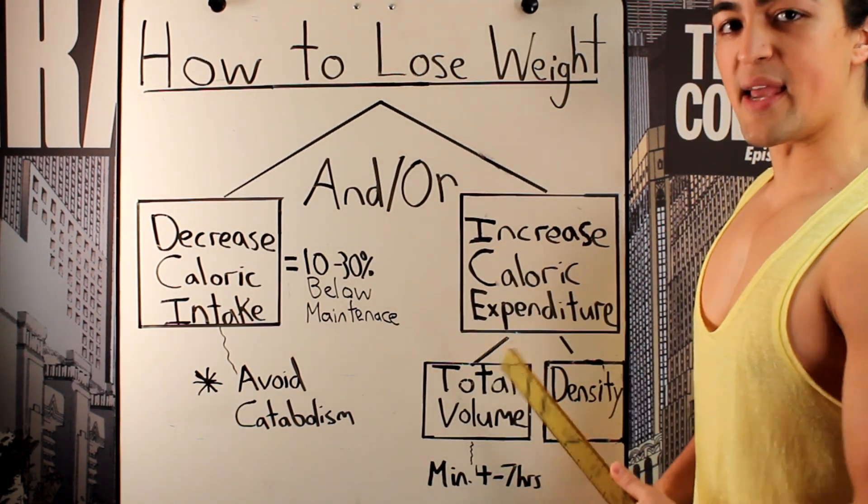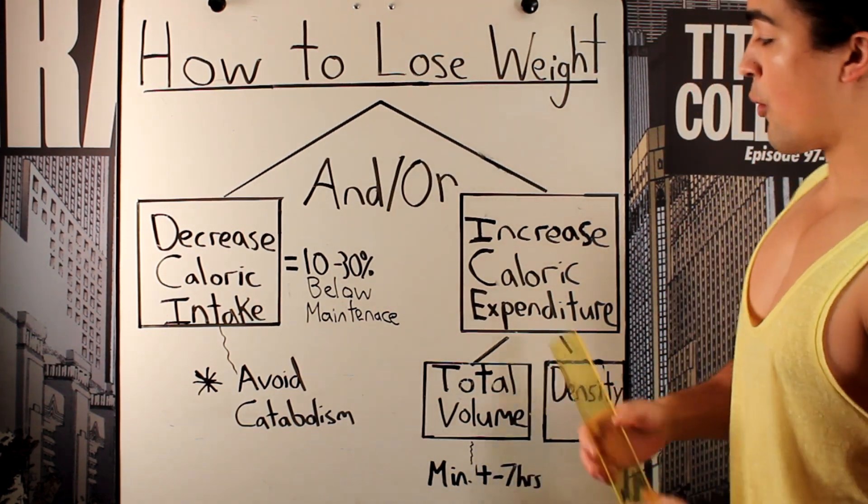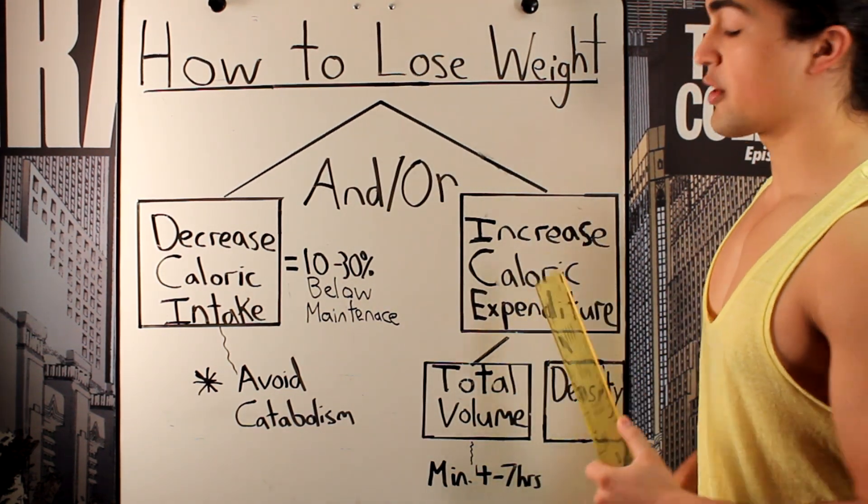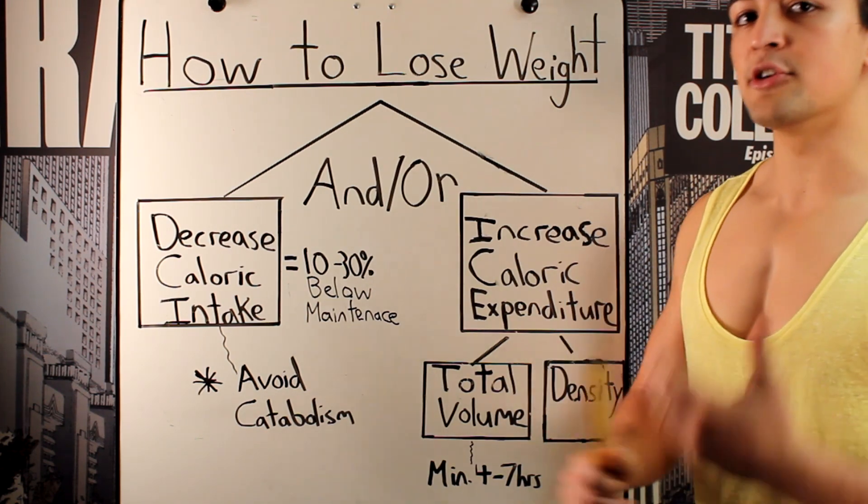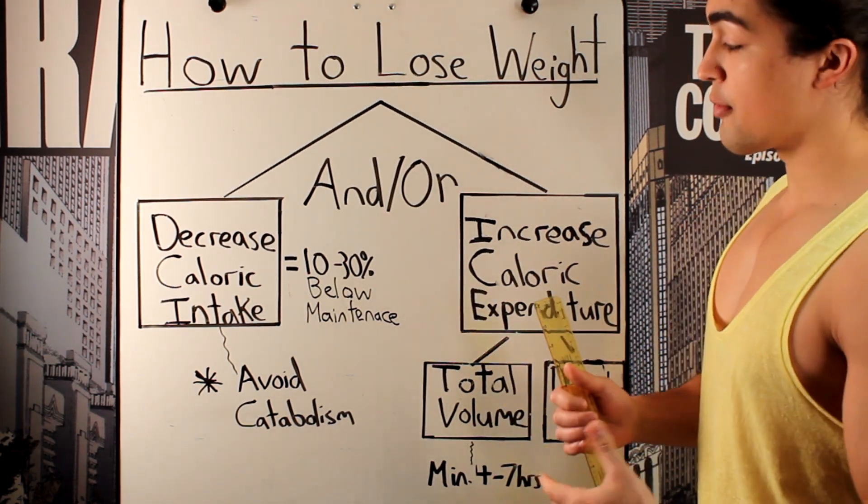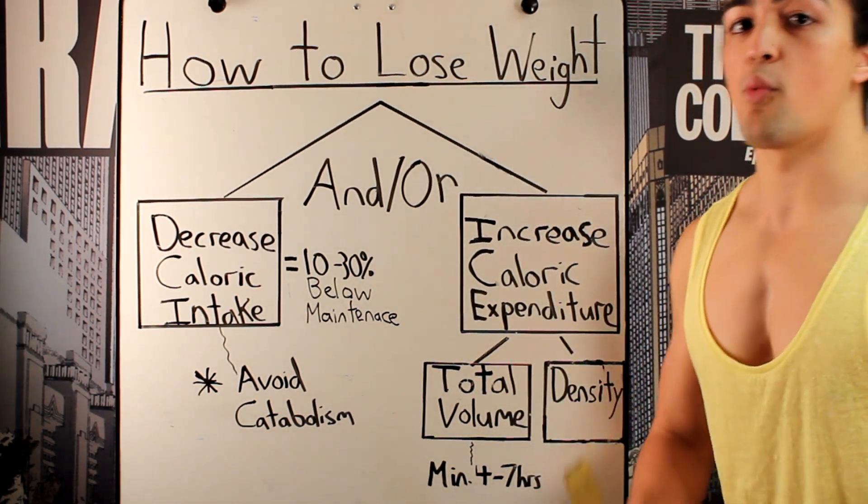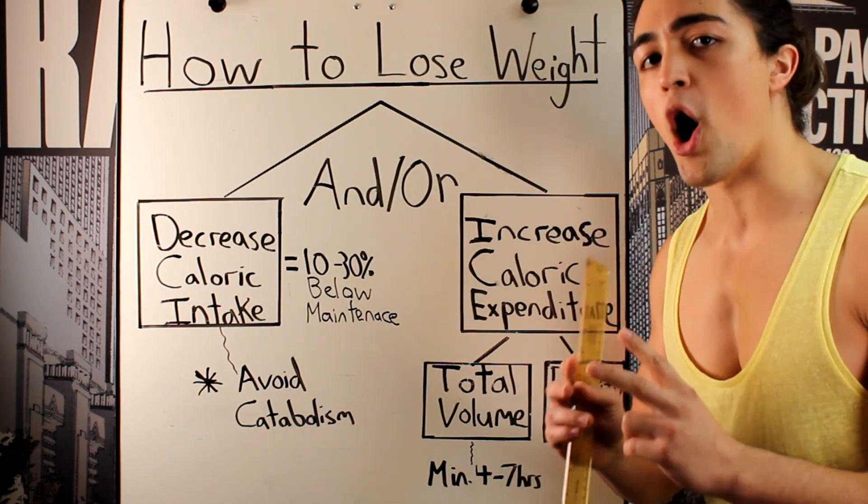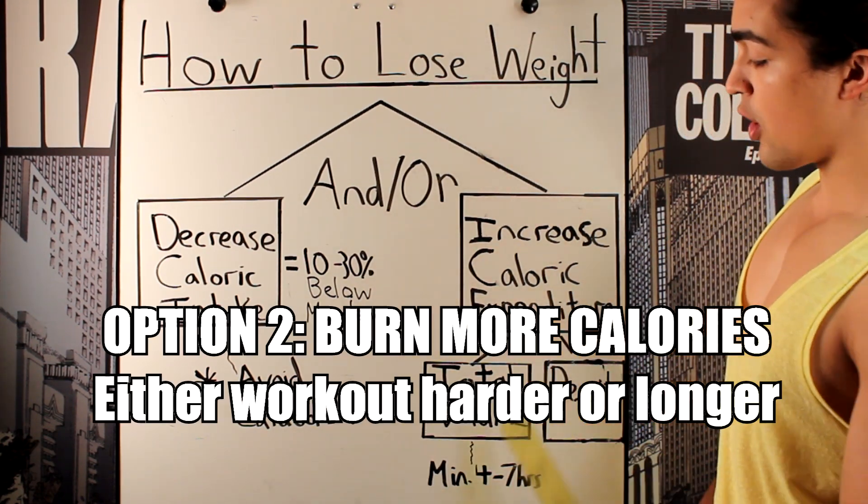Let's look at option B, my personal favorite, more exercise. Now, what this means, I put down increased caloric expenditure. Remember, it's really energy in, energy out. A lot of thermodynamics. So, what you can do here when you want to work out more, you have two options available to you, and the two are very important.